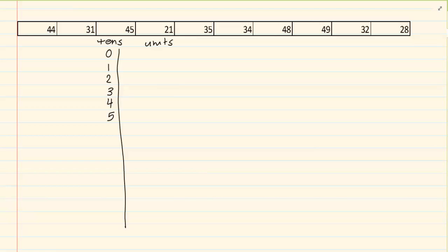Now if I look at 44, then I am going to place the 4 under the 44. Can you see that? So the 4 is the tens and then this 4 represents the units. 31, 45, 21. So can you see what I am doing? Every unit is going in line with its tens. 35, 34, 48, 49, 32, 28.